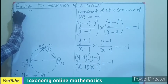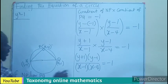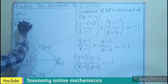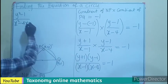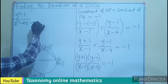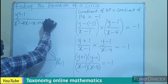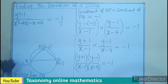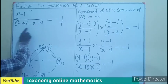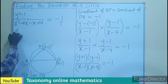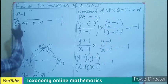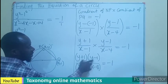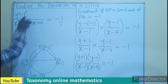Expanding: the numerator gives y² − 1. The denominator gives x² − 4x − x + 4, which is x² − 5x + 4. So we have (y² − 1) / (x² − 5x + 4) = −1. Since the right-hand side is −1 over 1, we can cross-multiply: y² − 1 = −1 · (x² − 5x + 4).